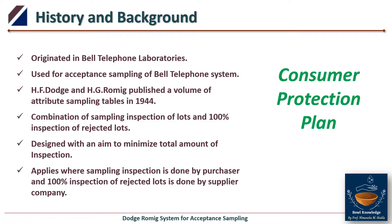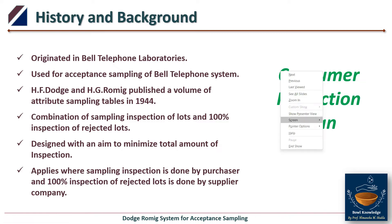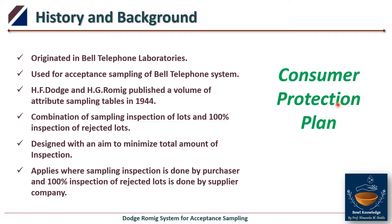Coming to the history and background of the Dodge-Romig System: it originated in Bell Telephone Laboratories and these tables were used for acceptance sampling at Bell Telephone System. H.F. Dodge and H.G. Romig published the volume of Dodge-Romig tables for attribute sampling in the year 1944. The Dodge-Romig system is basically a plan intended for maximum consumer protection.